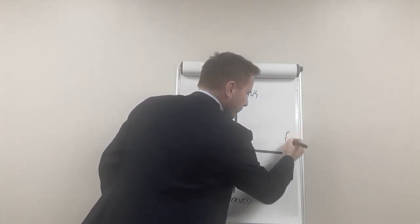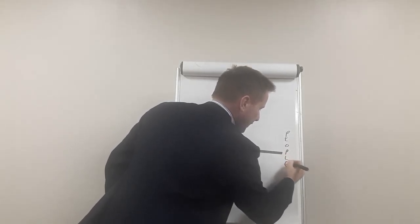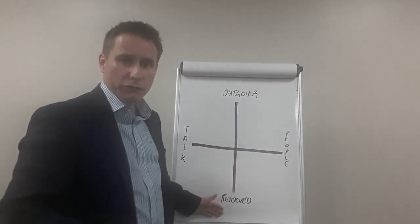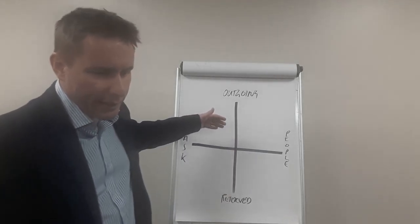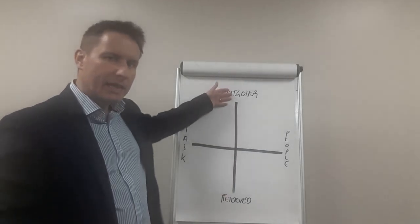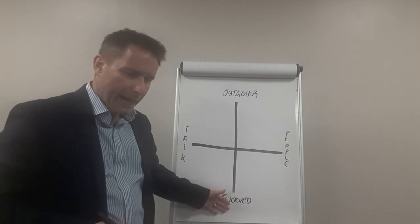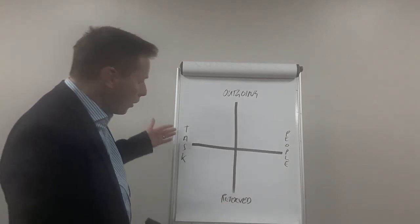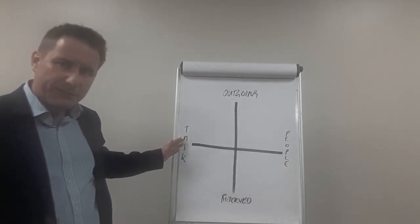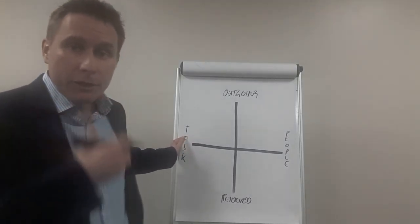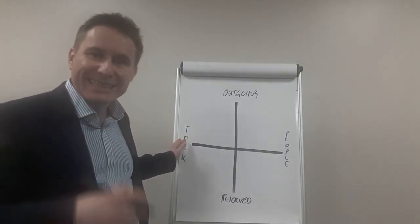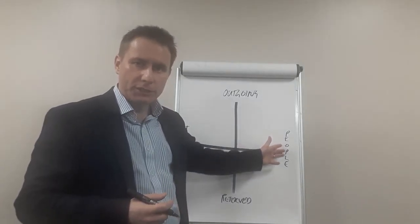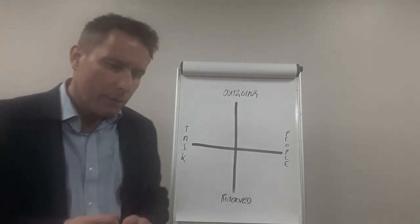And in terms of the way they talk, are they more task-focused to get things done, or are they more people-focused, thinking about the impact on others? So again, outgoing or reserved—could be extrovert, introvert, loud, or slightly softer.